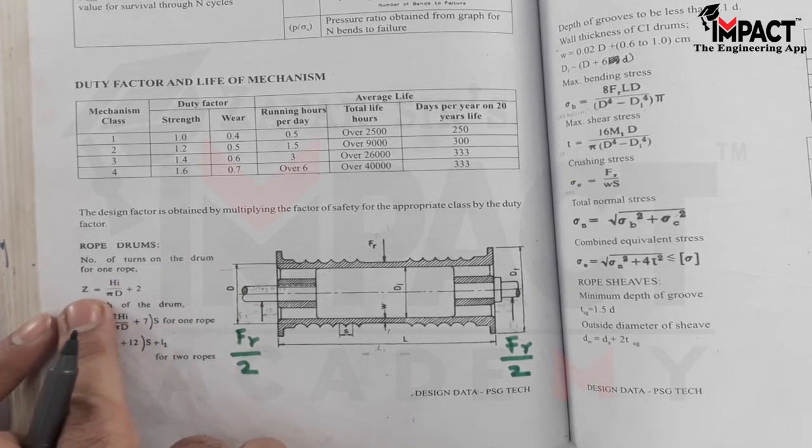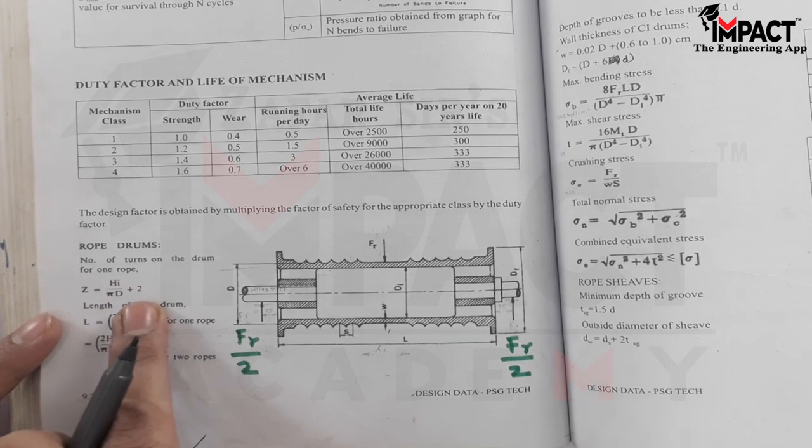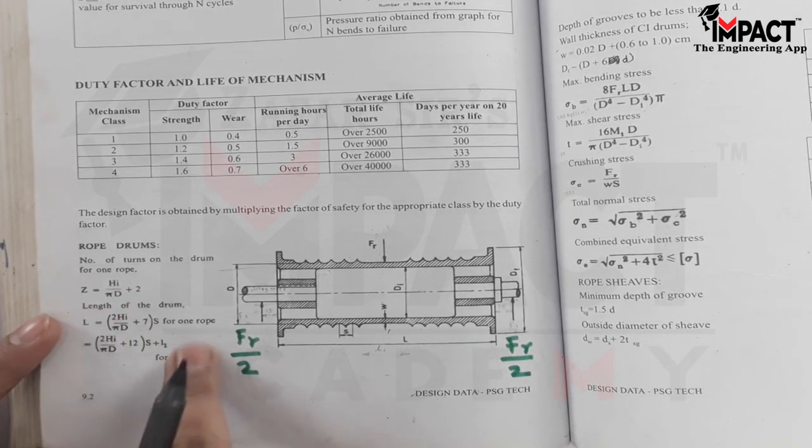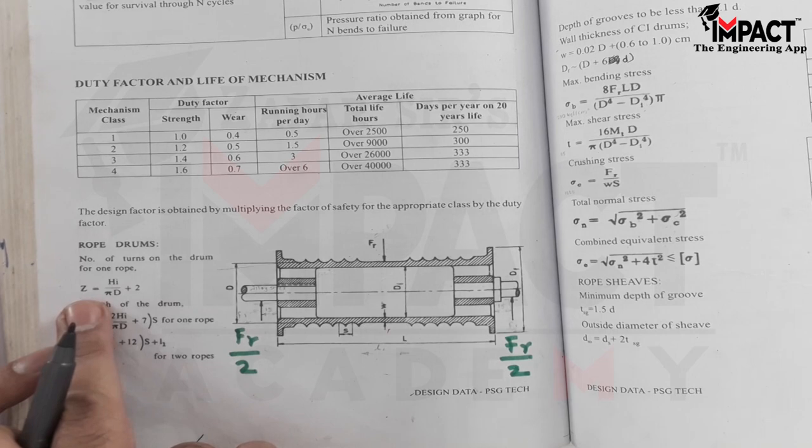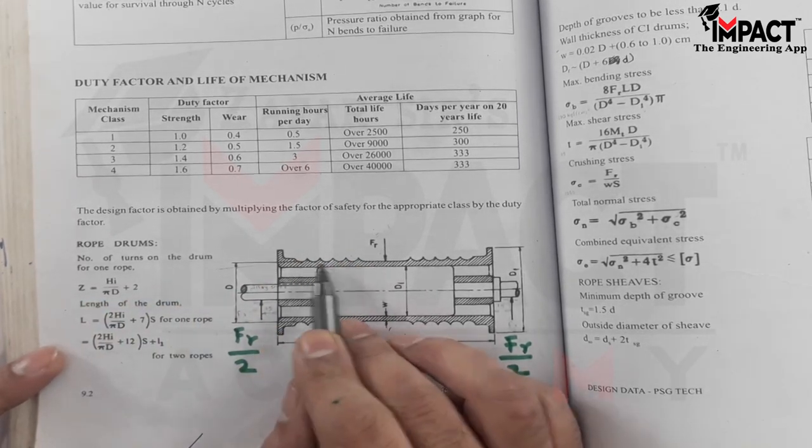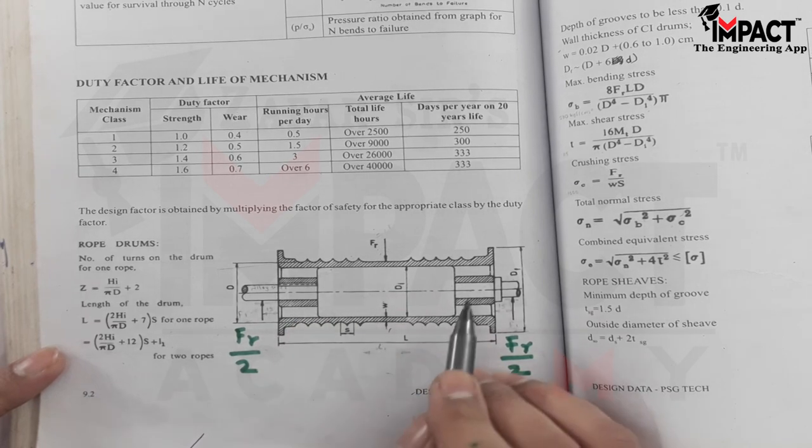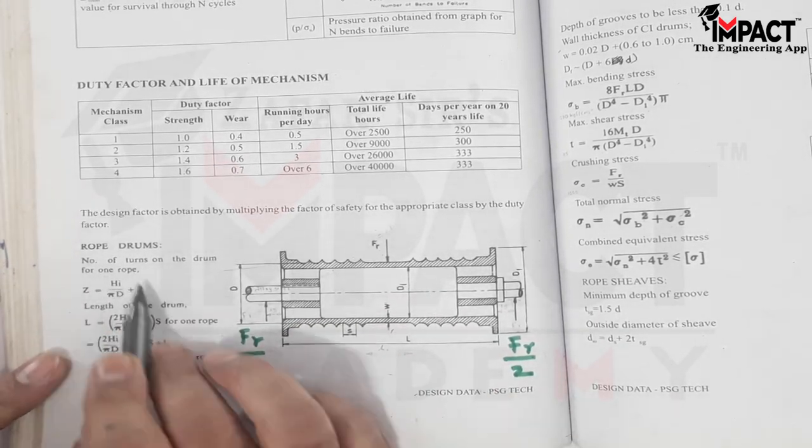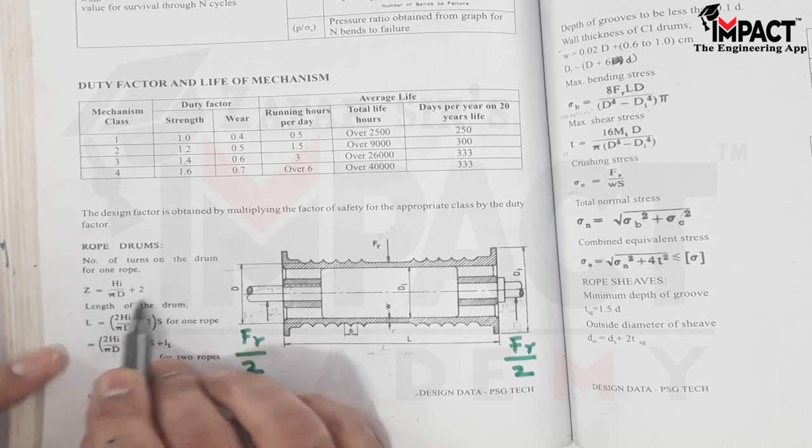It is Z equals Hi upon pi D plus 2. The remaining formulas are given for the length of drum, but here we require the number of turns. As we can see here on this rope drum, there would be number of turns provided on which the rope could be bound. So our system is one rope, so I'll use this formula of Z which is Hi upon pi D plus 2.